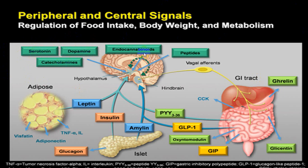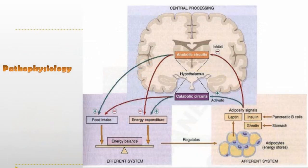Central stimulatory factors include serotonin, dopamine, catecholamines, endocannabinoids, and peptides acting at the hypothalamus. From the GI tract, signals include GLP-1 and GIP; from the pancreas, amylin and insulin; from adipose tissue, leptin; and from fat, adiponectin, TNF-alpha, and visfatin. Other factors include ghrelin. Some signals stimulate appetite and others inhibit it, determining overall food intake.